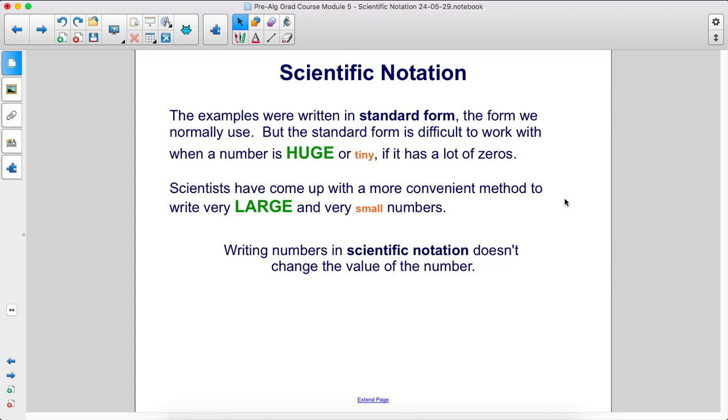Scientists have come up with a more convenient method to write very large and very small numbers. Writing numbers in scientific notation doesn't change the value of the number.